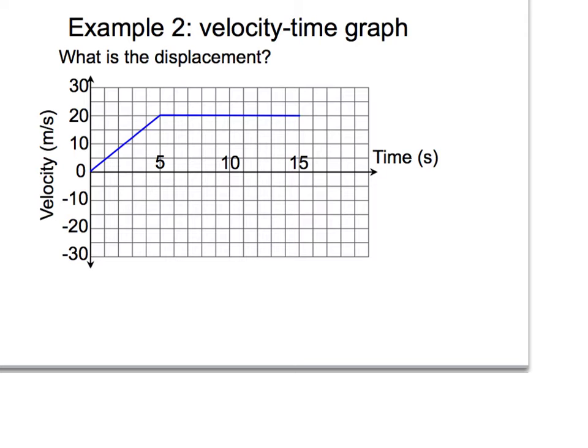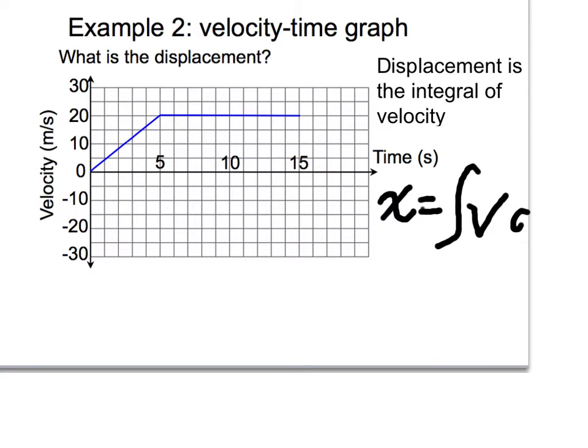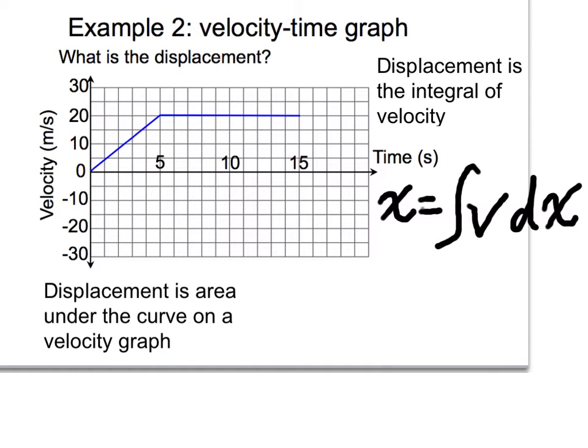But now we're going to do it from a velocity time graph. Something that's going to be kind of helpful to know, especially when you take calculus, is that displacement is the integral of velocity. Remember a couple of nights ago when I said that velocity is the slope of a distance time graph? Well, doing the opposite of slope, kind of going backwards, is called integrating. And so we're going to learn how to graphically integrate here. You're not actually going to do the formalism for integral, which would look more like this right here. Displacement is the integral of velocity with respect to x. So that's the calculus way of doing it. But here you're going to do it graphically.